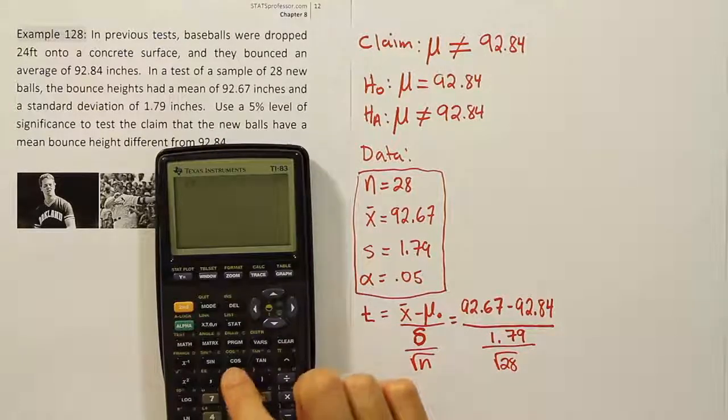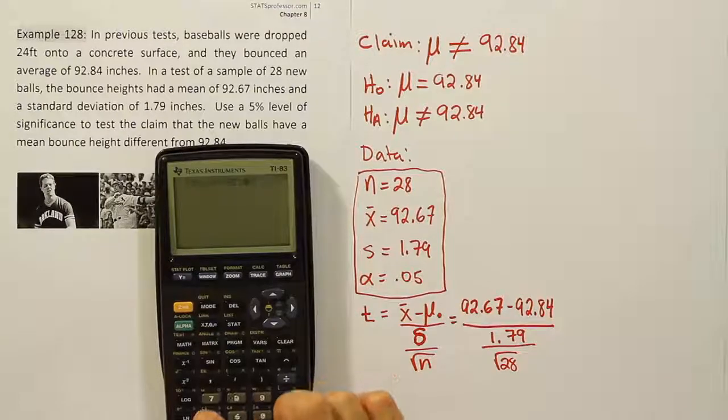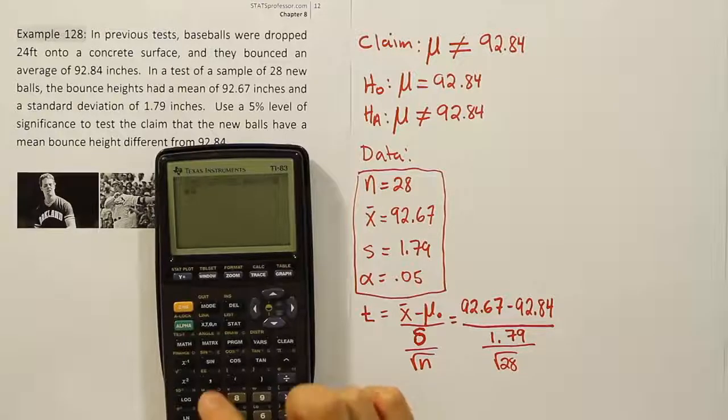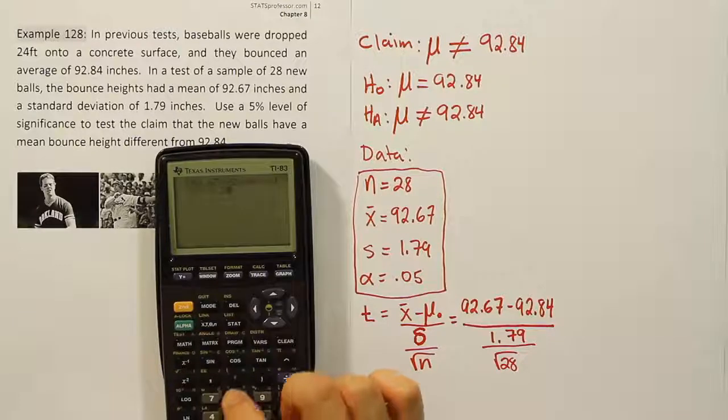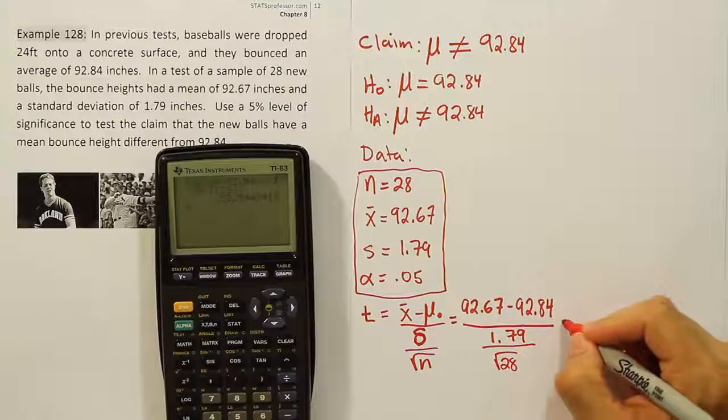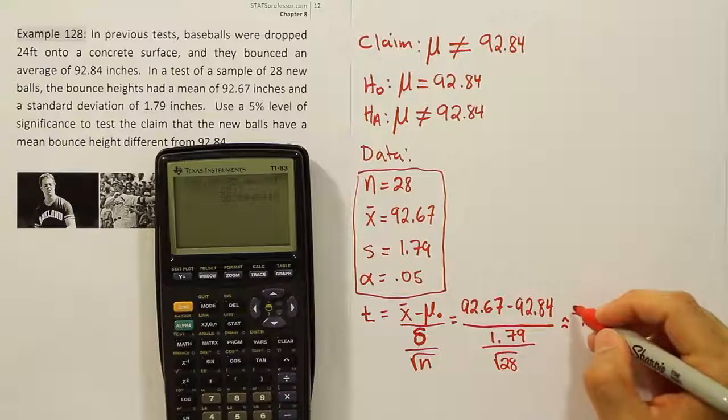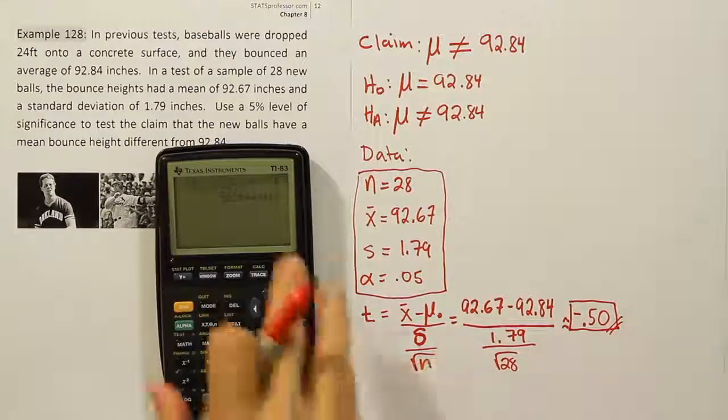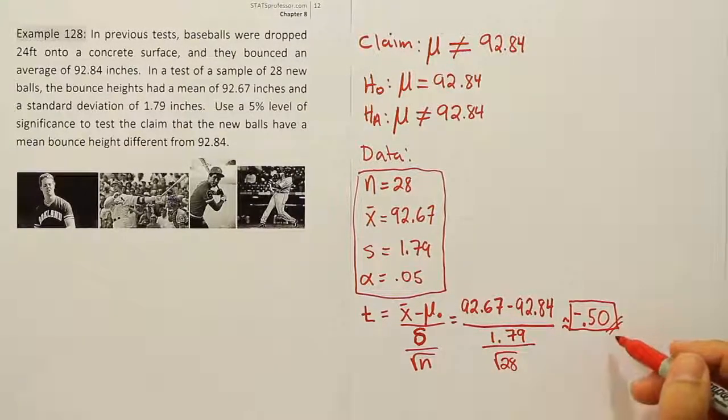So let's see what that gives us when we put that into our calculator. In the top part, we'll have 92.67 minus 92.84, close that up, divide by open parentheses, 1.79 divided by the square root of 28, close that up and hit enter. And we get a test stat of minus 0.50. So the absolute value of it is pretty small, it's almost close to zero. At this point, we would probably say that we will not be able to reject the null hypothesis. To be sure though, we want to draw the curve and come up with a critical value.